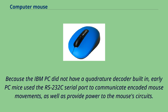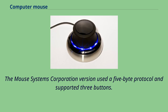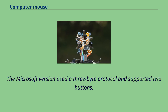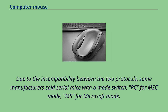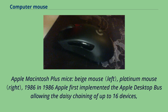Because the IBM PC did not have a quadrature decoder built in, early PC mice used the RS-232C serial port to communicate encoded mouse movements and provide power to the mouse's circuits. The Mouse Systems Corporation version used a 5-byte protocol and supported three buttons. The Microsoft version used a 3-byte protocol and supported two buttons. Due to the incompatibility between the two protocols, some manufacturers sold serial mice with a mode switch — PC for MSC mode, MS for Microsoft mode.